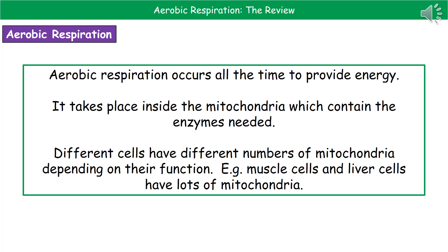The first type of respiration we're going to look at is aerobic respiration. This is occurring all the time in all your cells to provide energy, and it takes place inside the mitochondria of your cells, because they contain the enzymes required for the reaction. Cells don't all have the same number of mitochondria — those cells with a much higher energy requirement, like liver cells and muscle cells, will have more mitochondria than those with lower energy requirements.